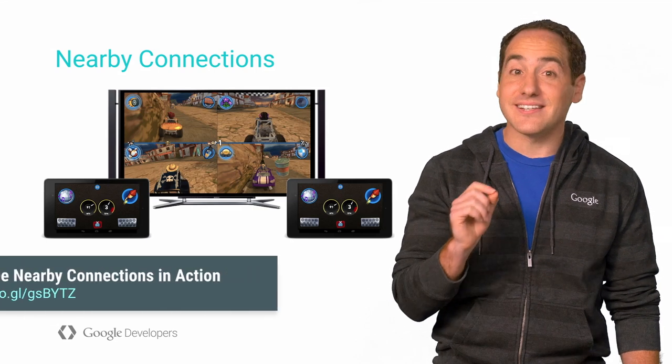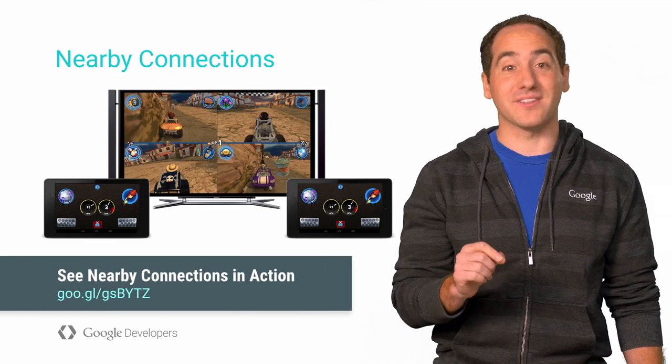One of the most powerful parts of Android TV is that it opens up new opportunities for local multiplayer gaming. For example, you can use your Android phone as a second screen and as a game controller for your TV game. You can enable this technology using an API called Nearby Connections. And you can see it in action by watching this video.